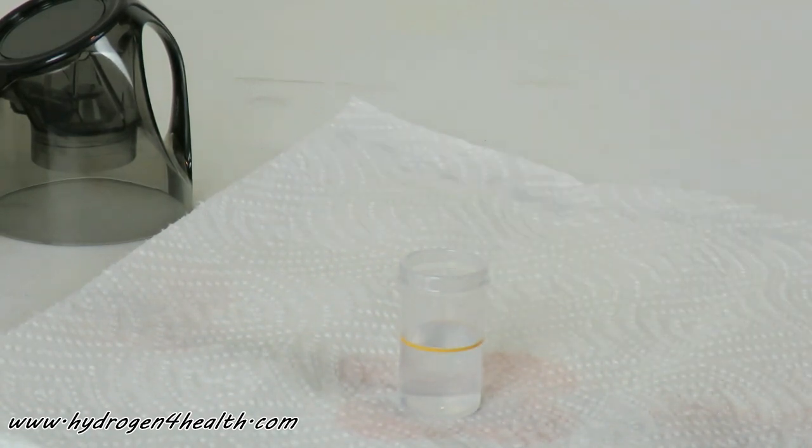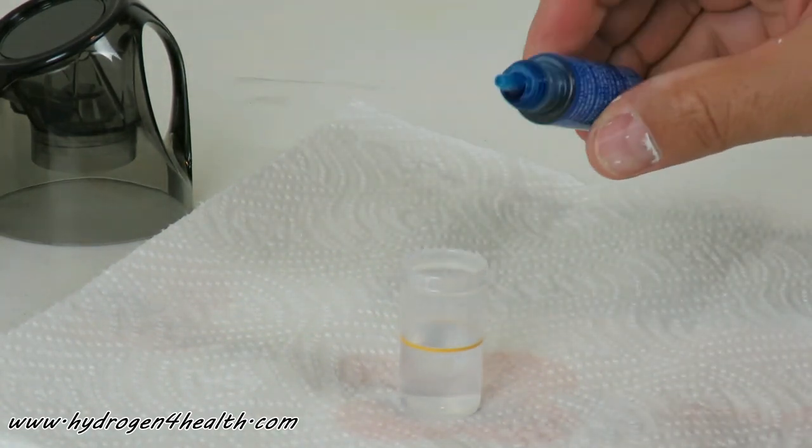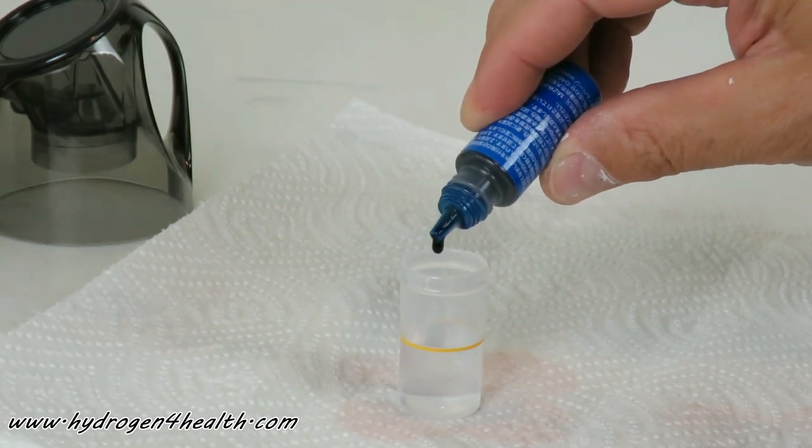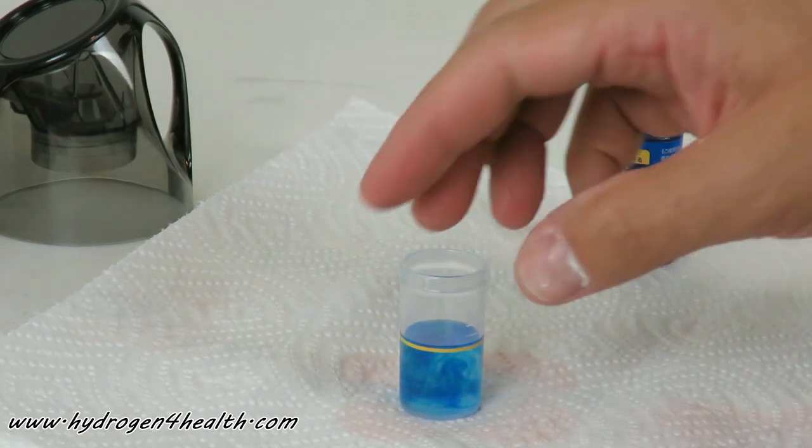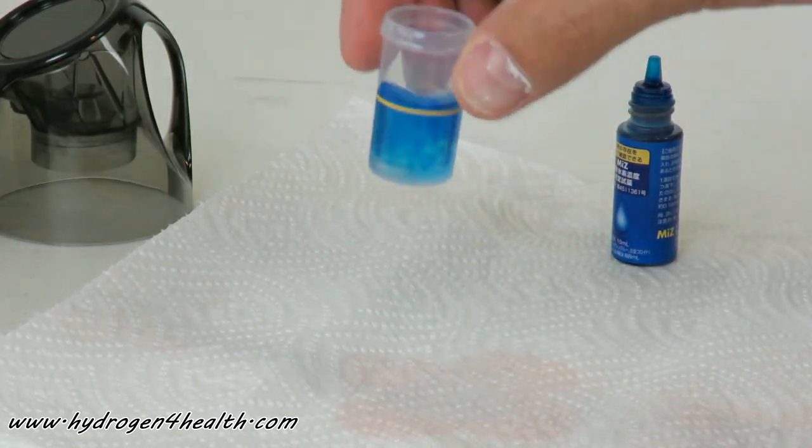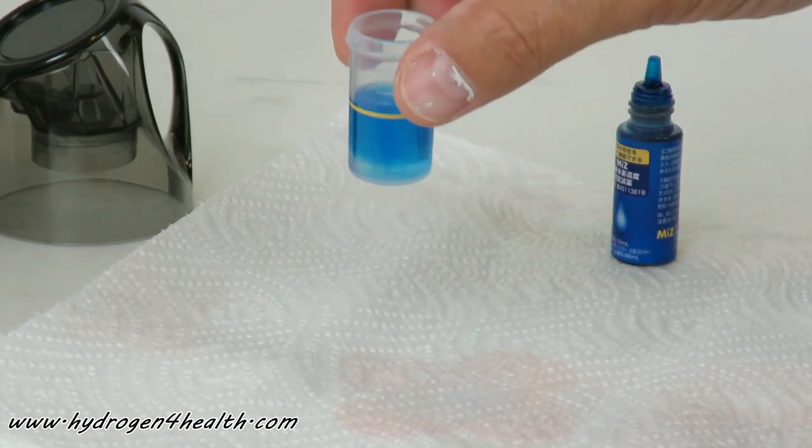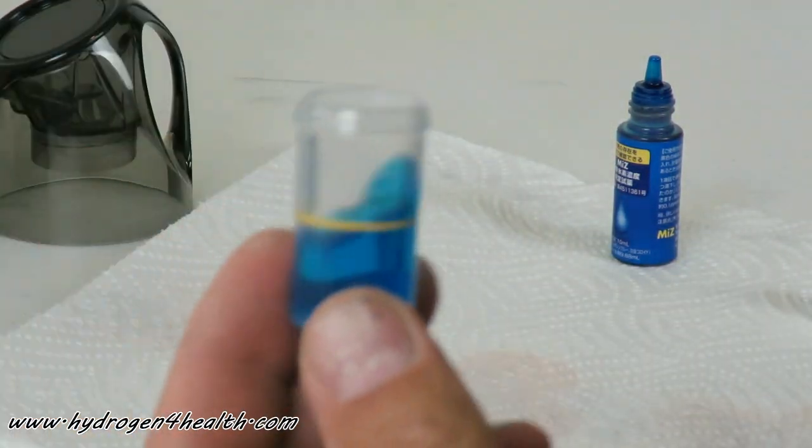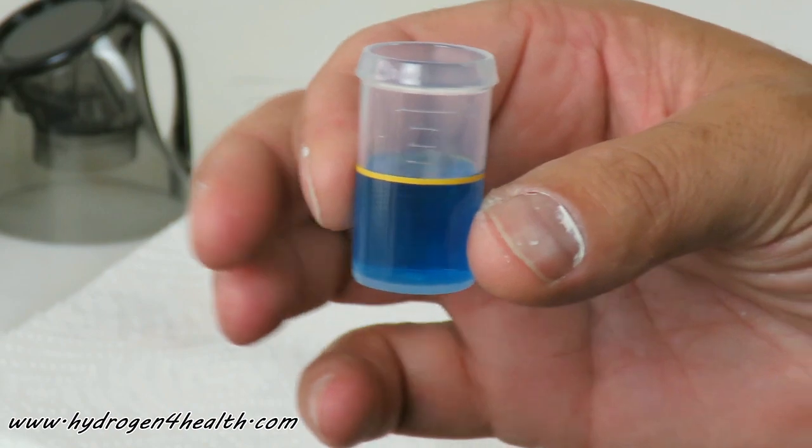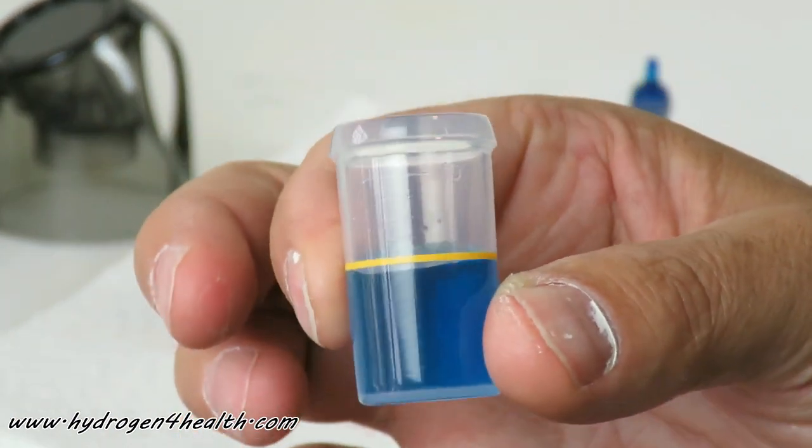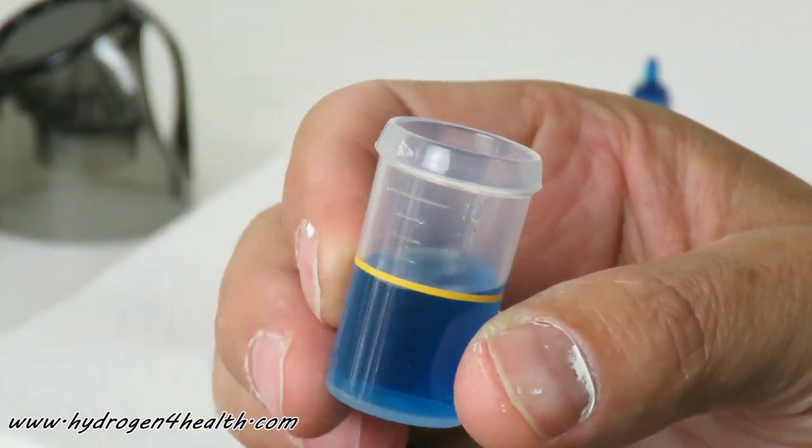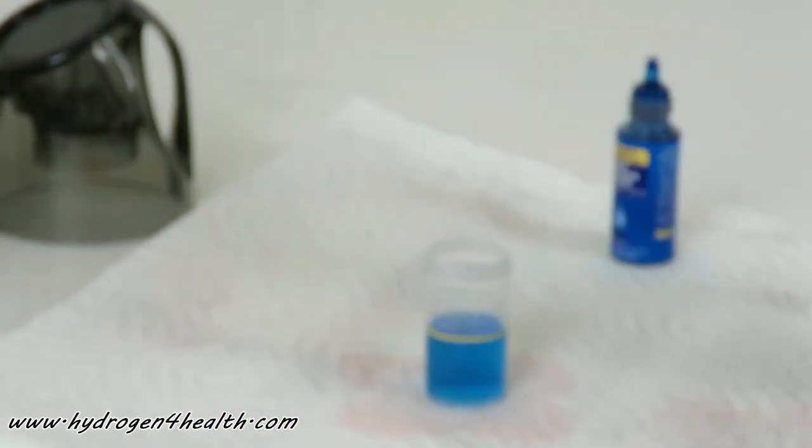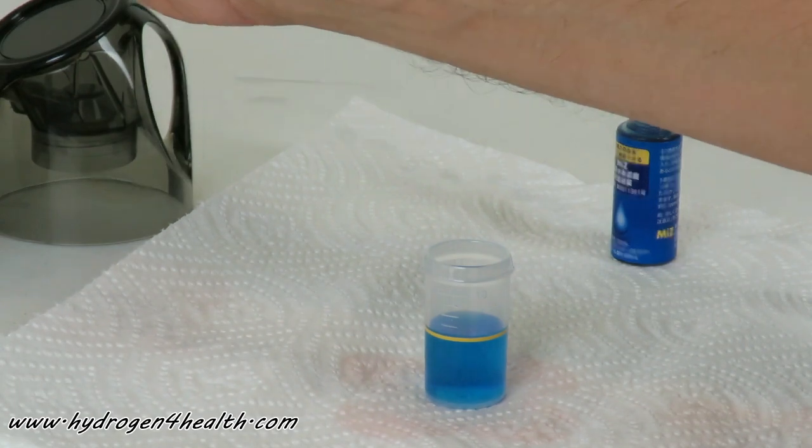All right, let's put a drop of MIZ into the water. Now if it turns clear, it has 0.1 ppm. As you can see, the water did not clear up, so that means that this bottle is producing less than 0.1 ppm.